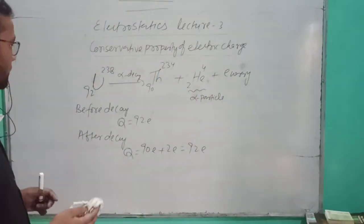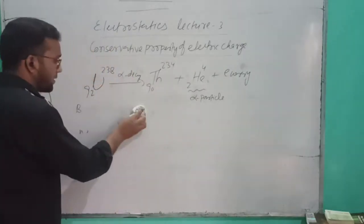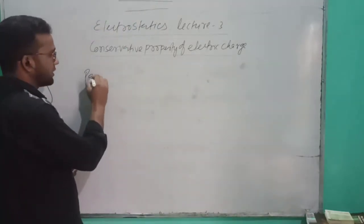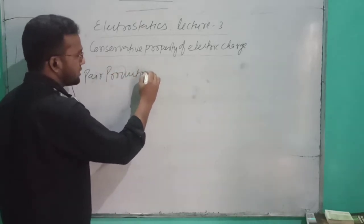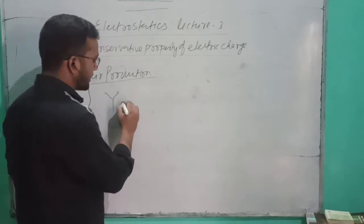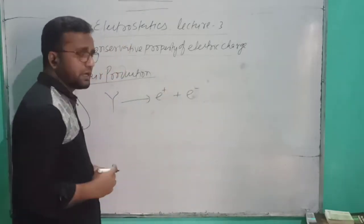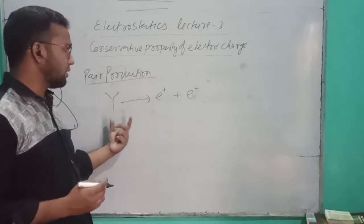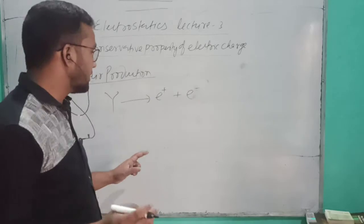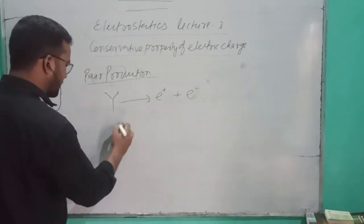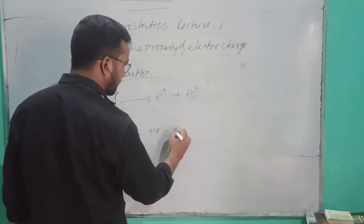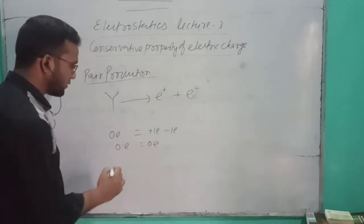What is our concept? We can see pair production, which is our concept. What happens in pair production? When gamma photon and matter interact, we get electron and positron. Before reaction, before this production, no charge. We have zero charge. After production, plus 1e and minus 1e.